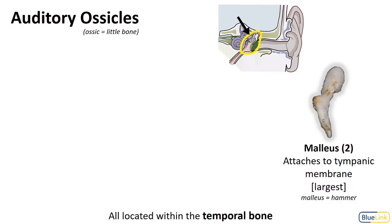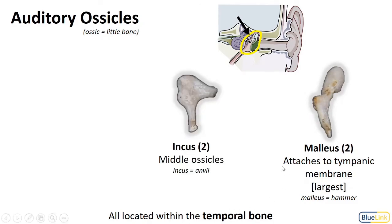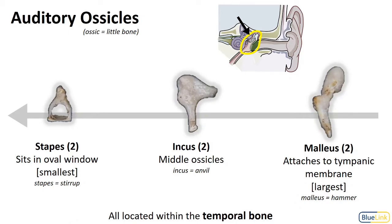Now let's talk through these ossicles from the tympanic membrane over to the oval window. Our first is the malleus — we have one on either side. The malleus means hammer; this portion here is referred to as its handle, and you can imagine that being the part you would use to hammer a nail into the wall. This is the largest of the bones, and we can see its attachment there at the tympanic membrane. The incus is the second; it is an anvil shape, found between the two ossicles, and is intermediate in size. The smallest of the ossicles is called the stapes — the smallest bone in our body — which is a stirrup shape and sits in the oval window.